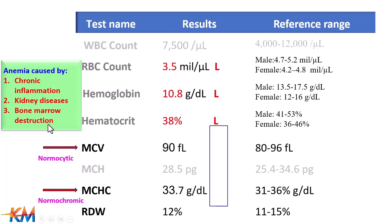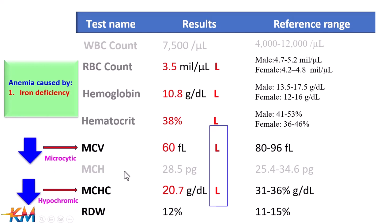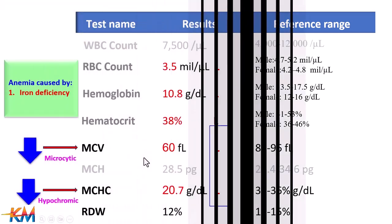Bone marrow destruction, which can occur due to many causes, leads to decreased generation of new red blood cells. The last possibility is a decrease in both MCV and MCHC, which is called microcytic hypochromic anemia.